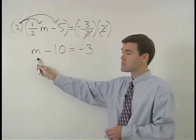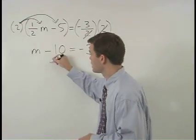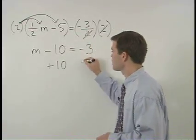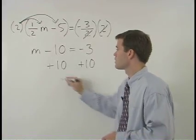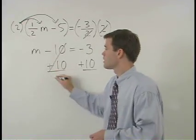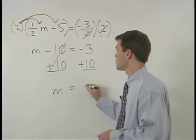Now to get m by itself, we just add 10 to both sides of the equation and m equals 7.